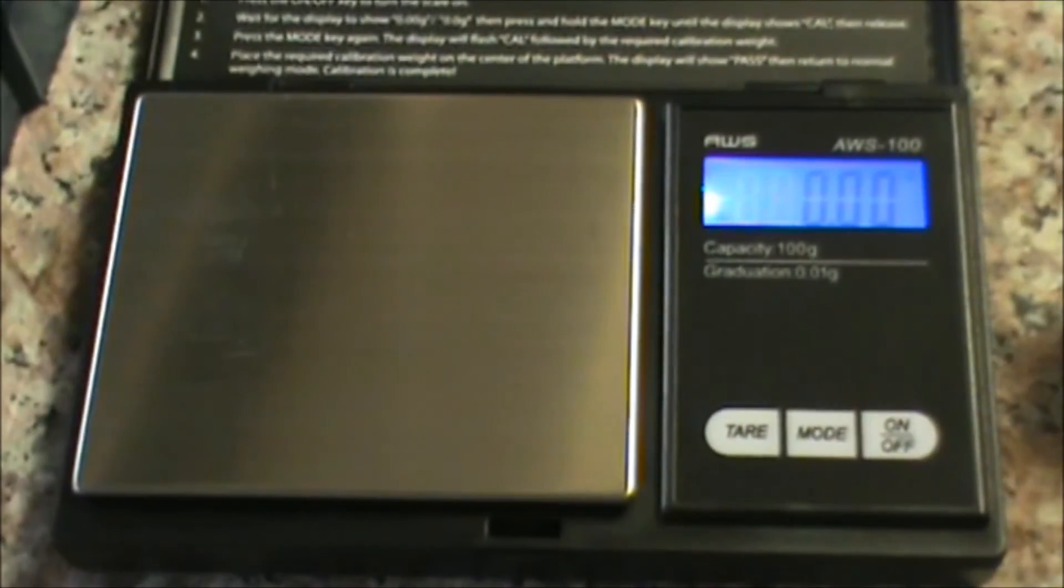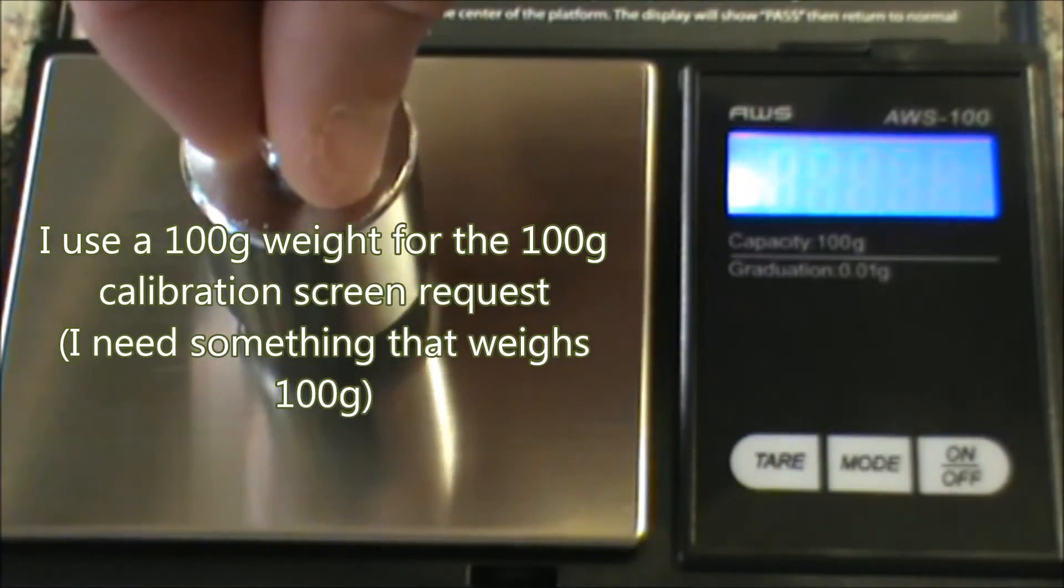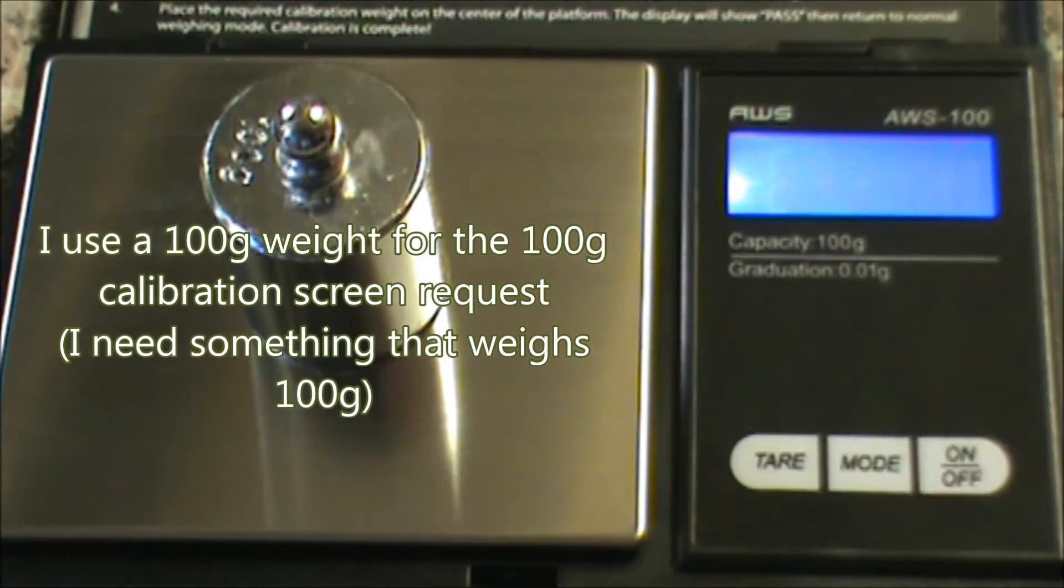So I'm going to calibrate it, zero in on here. We're at zero right now. I'm going to put it on mode, it's going to say CAL, and then I hit mode again and it's going to begin to blink. I'm going to put my calibration unit on, it says 100 and it passes.